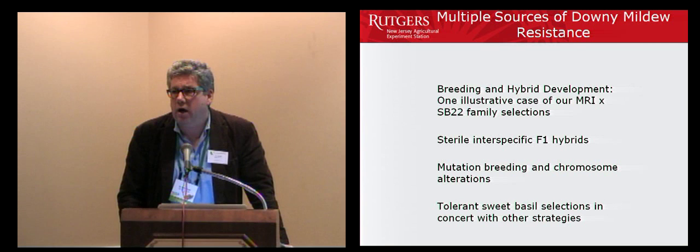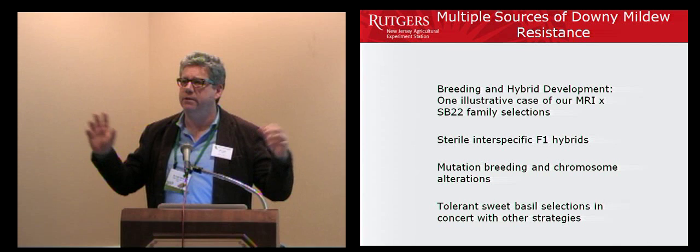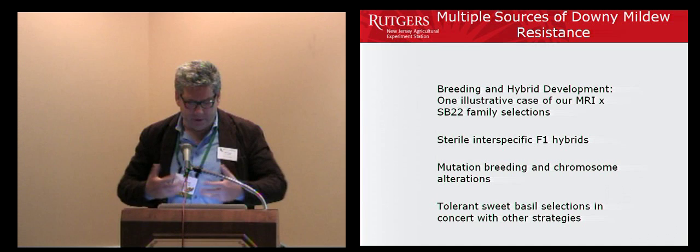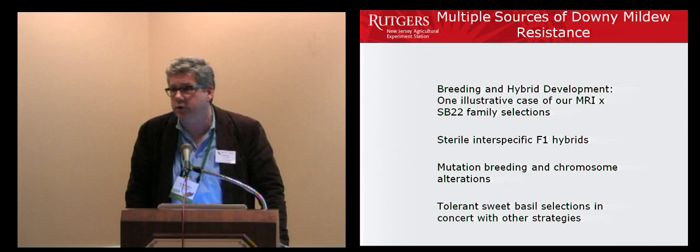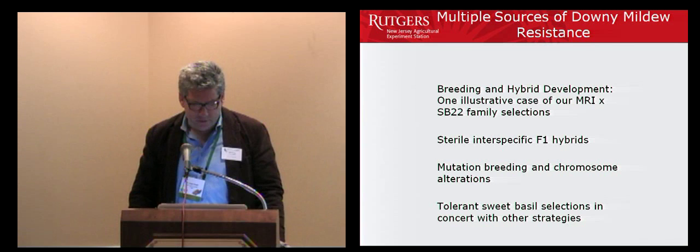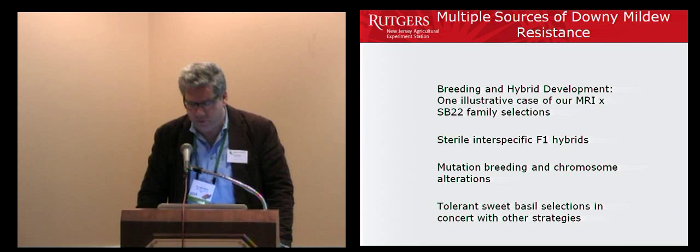Robert showed what happens when you cross two very genetically distinct plants — you get a plant, but it won't produce seeds. That's both good and bad. If you like the look and the smell, then it could be vegetatively or tissue culture propagated, which is useful for greenhouse growers with live plants not necessarily dependent on seed.